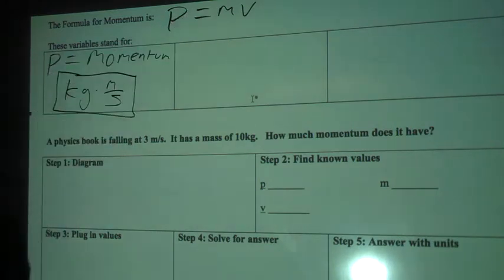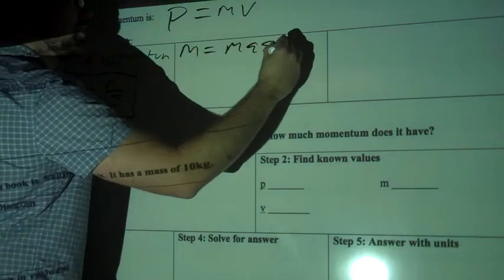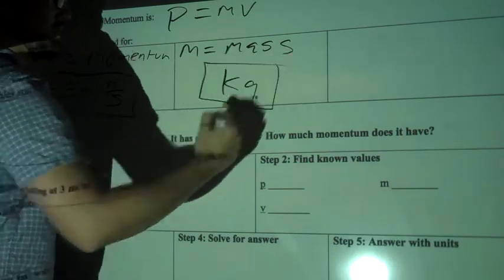Okay, and you'll see how that works out up here. M is mass, and mass is always measured in kilograms in these equations that we do.